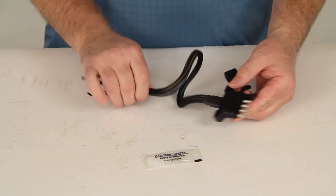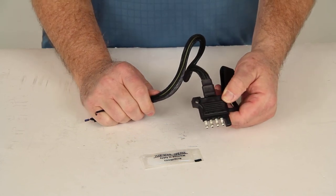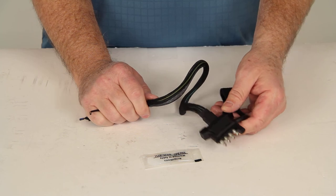That should do it for the review on part number HM47910, the Hopkins Endurance 5-Way Flat Trailer Connector for the trailer end.